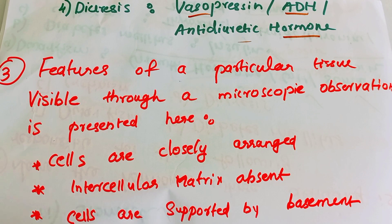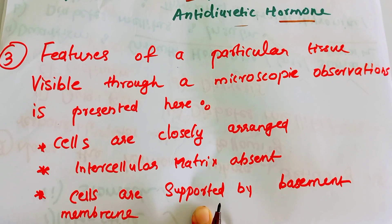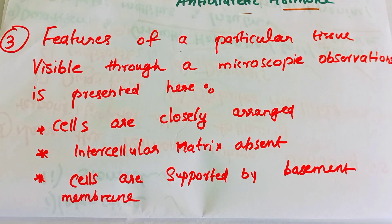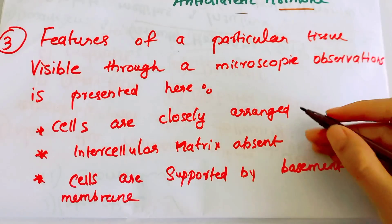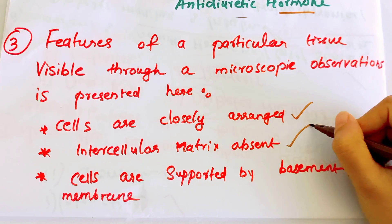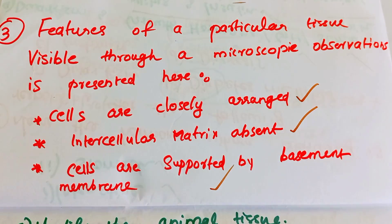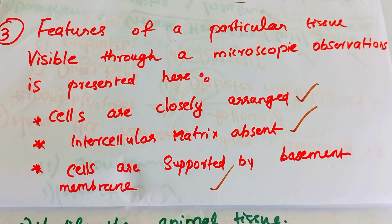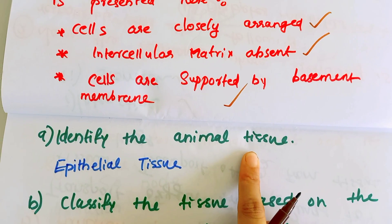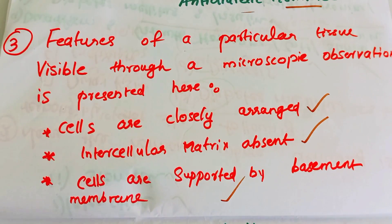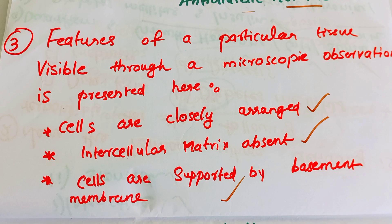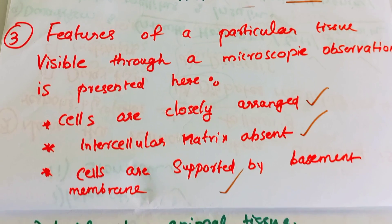Features of a particular tissue visible through microscopic observation are presented. The cells are closely arranged, the intercellular matrix is absent, and cells are supported by a basement membrane. Based on these features, the animal tissue identified is Epithelial tissue.